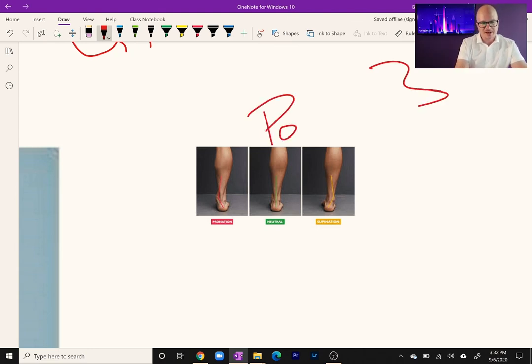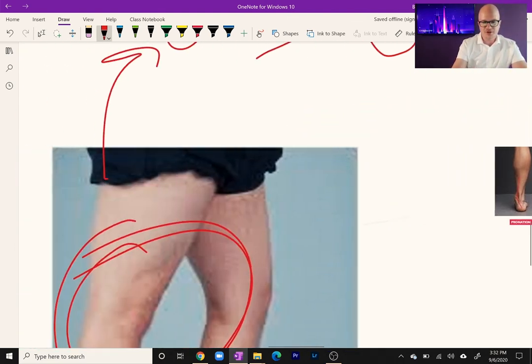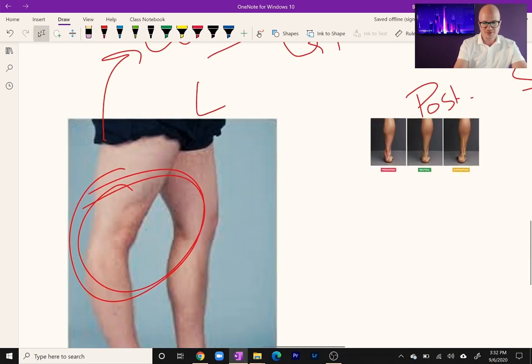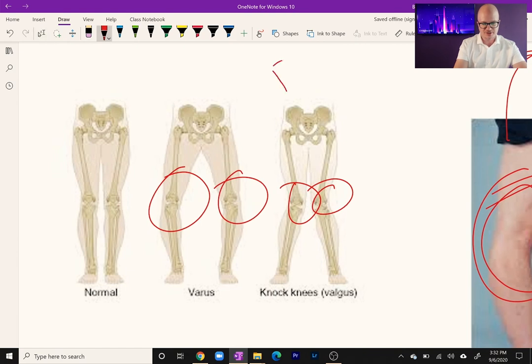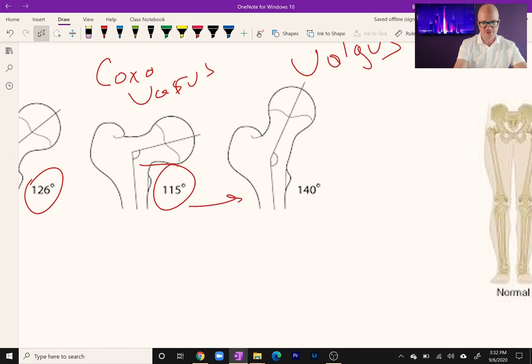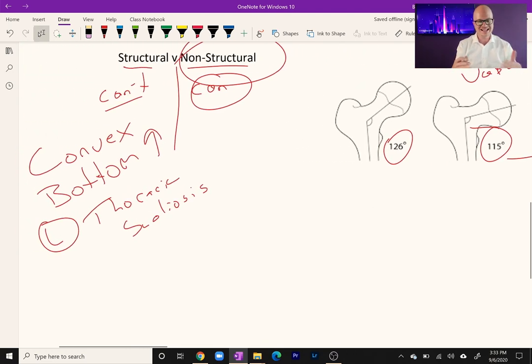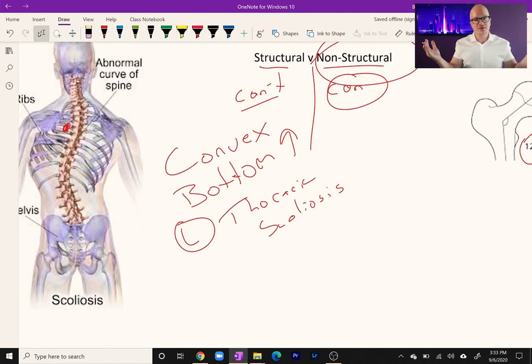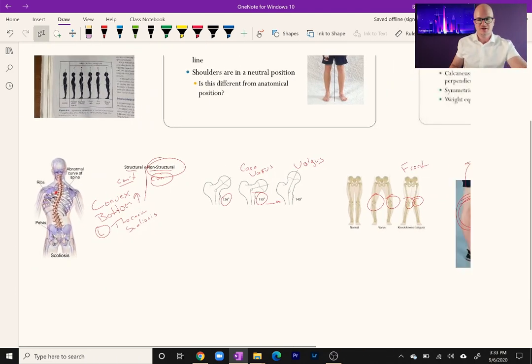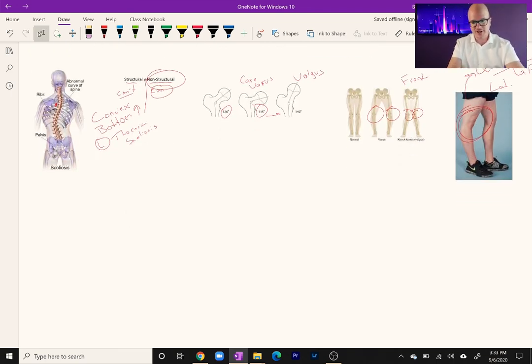That's why we have the three views. You're going to find this in the posterior view. That's going to be your best. The genu recurvatum, you're going to see more in the lateral view. The frontal view here, valgus and varus. It's harder to see the hip, but you might see the hip. You can see a leg length discrepancy there. What if you're looking at the frontal view and one knee is higher than the other? Then you know.